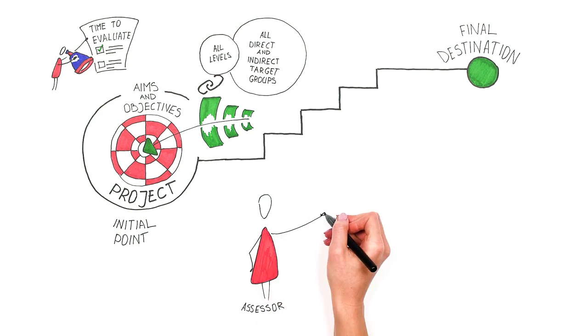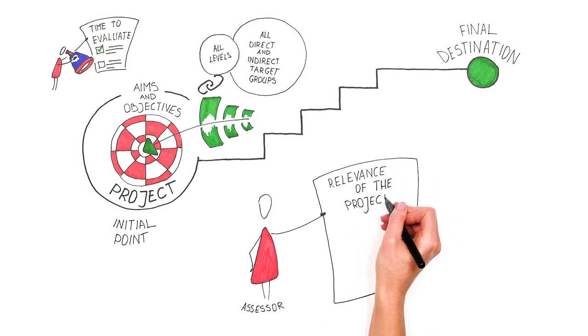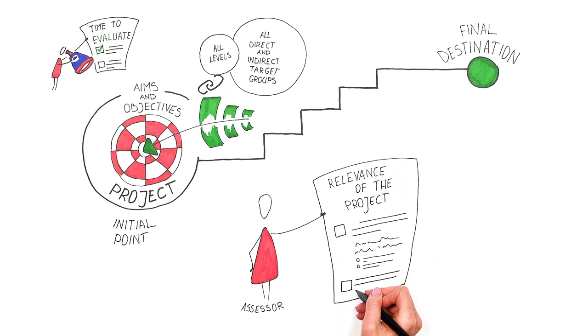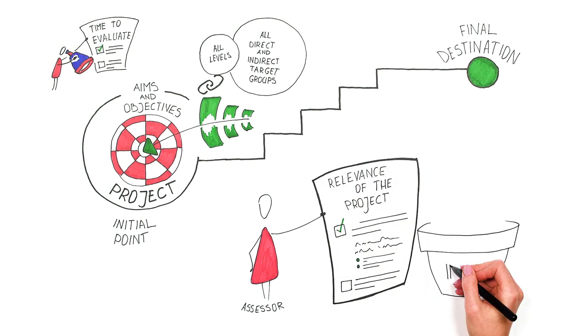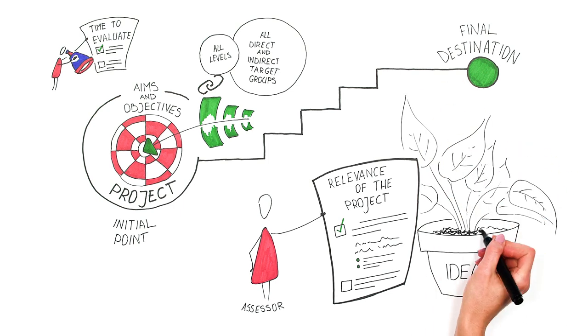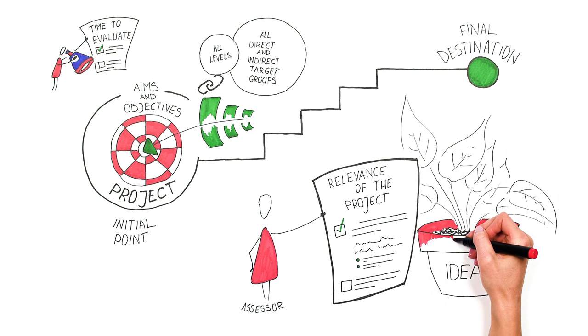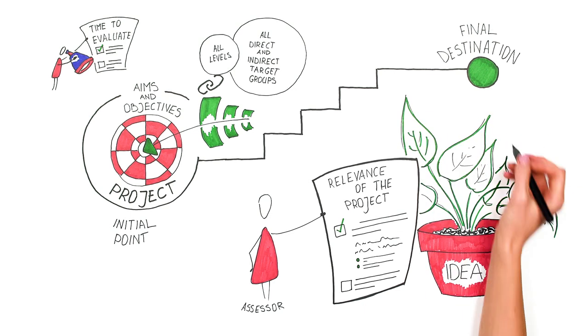To ensure the relevance of the project, assessors examine the extent to which the objectives are clearly defined, realistic and address issues relevant to the participating organizations and target groups. Assessors will also look at the consistency and coherence between the objectives of the project and the activities proposed, which means the link between the concept and the practice and between the idea as such and the realization of this idea.